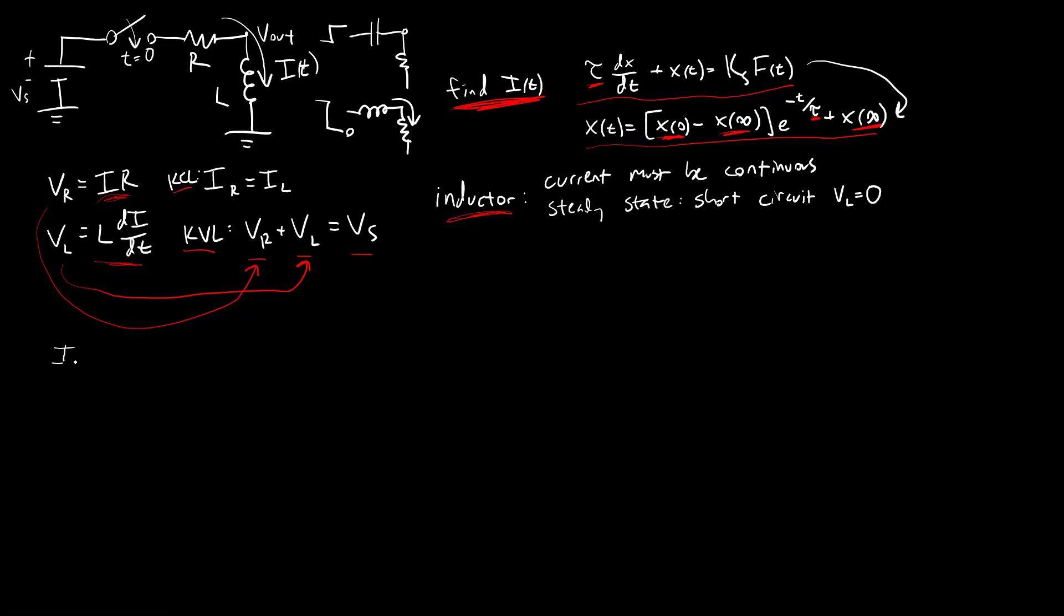What I'm going to do is plug both the voltage, plug the formulas for both the voltage of my inductor and the voltage of my resistor into this KCL formula. If I do that, I'm going to get IR plus L di dt equals VS.